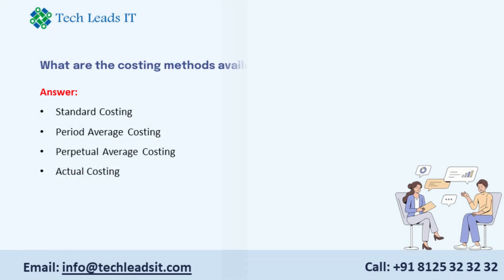What are the costing methods available in Fusion? Standard costing, period average costing, perpetual average costing, and actual costing.